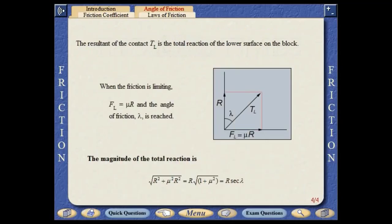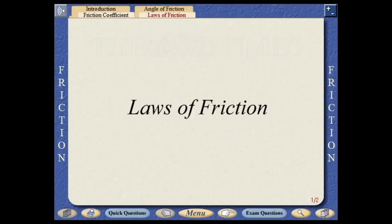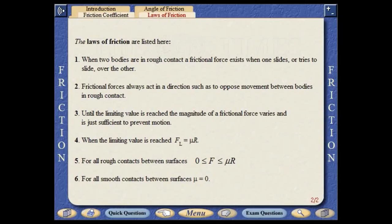When the friction is limiting, the magnitude of the total reaction can be shown to equal the value of the normal reaction multiplied by the secant of the angle. The laws of friction are listed here.